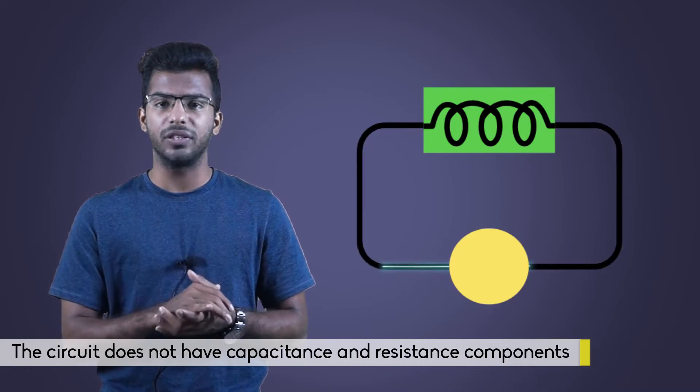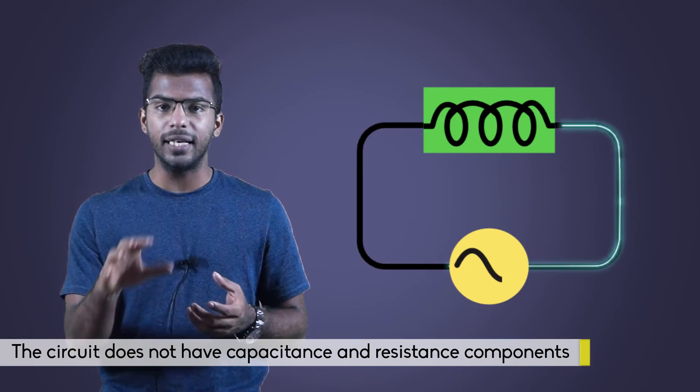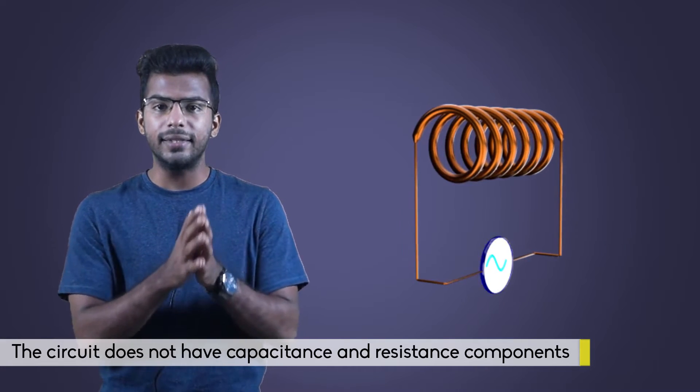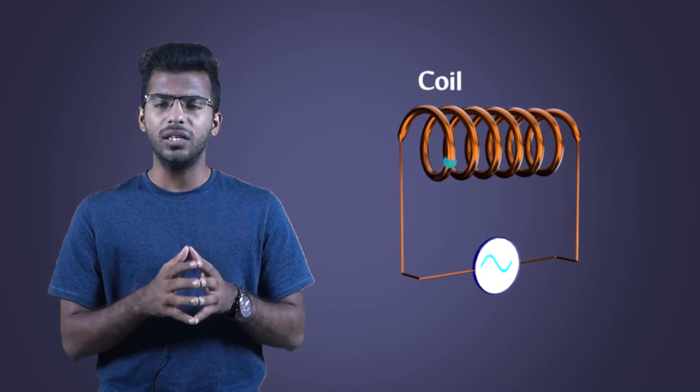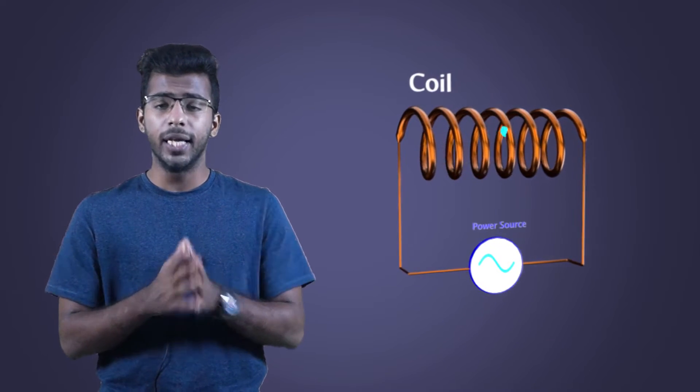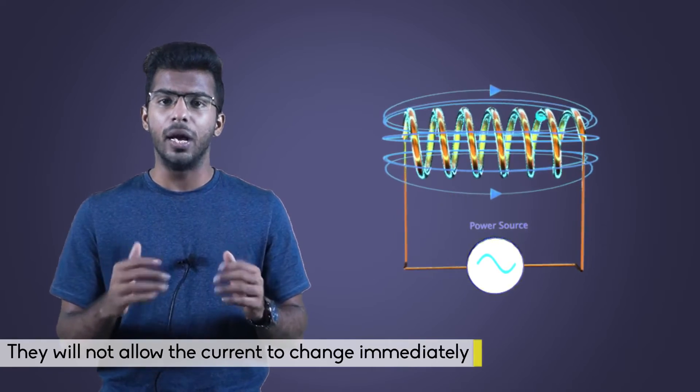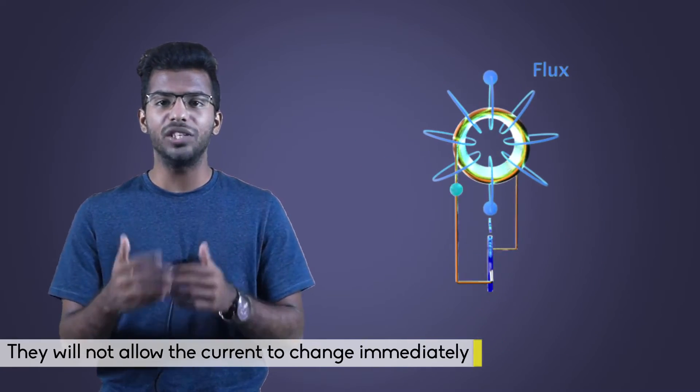So, as in the case of resistor, when you supply an AC current to this circuit, the AC current passes through the inductor coils. Inductors have a special property. They will not allow the current passing through them to change immediately.